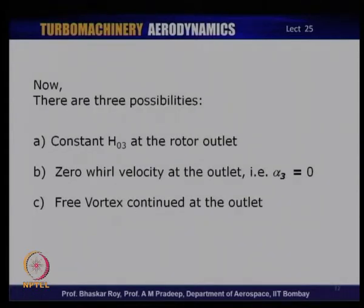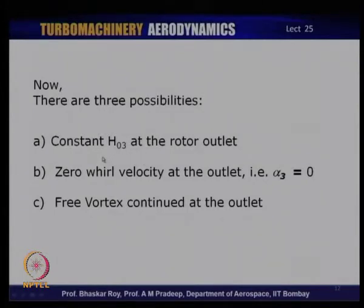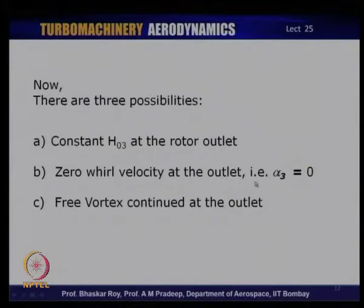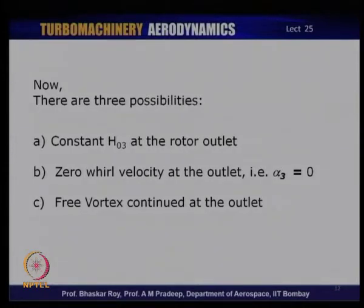The constant nozzle exit angle from the stator has three additional possibilities for the rotor outlet: first, constant total enthalpy H_03 at rotor outlet; second, zero whirl component at rotor outlet, meaning alpha_3 = 0 and C_W3 = 0; or third, free vortex law applied again at the rotor outlet. It is now possible to look at what the flow at the rotor outlet would be under these three different possibilities.